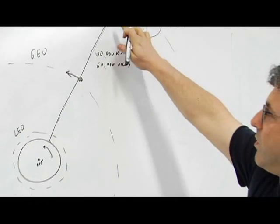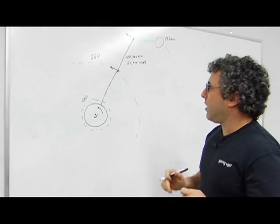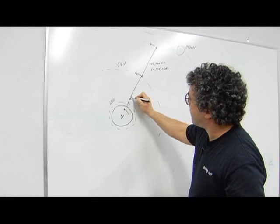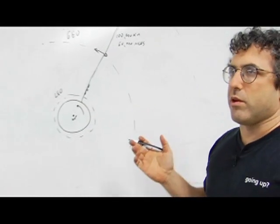And once this cable, which is, by the way, only a couple millimeters thick, we're talking about a cable that's about, let's say, a quarter of an inch thick. Once this cable is in place, you can have vehicles just basically travel up and down, up and down, using electric power.